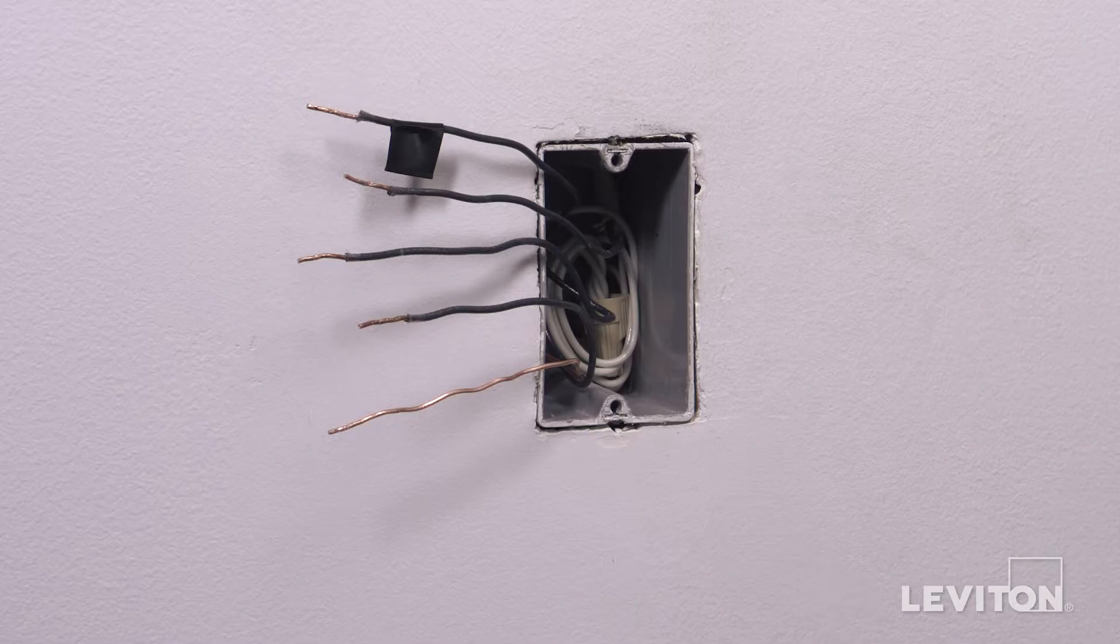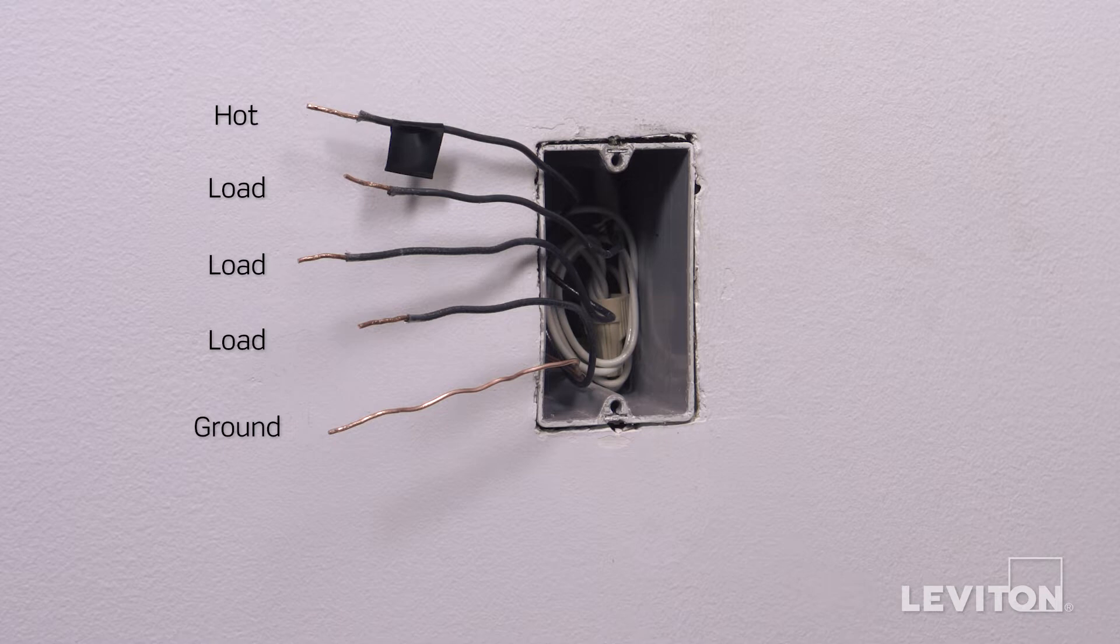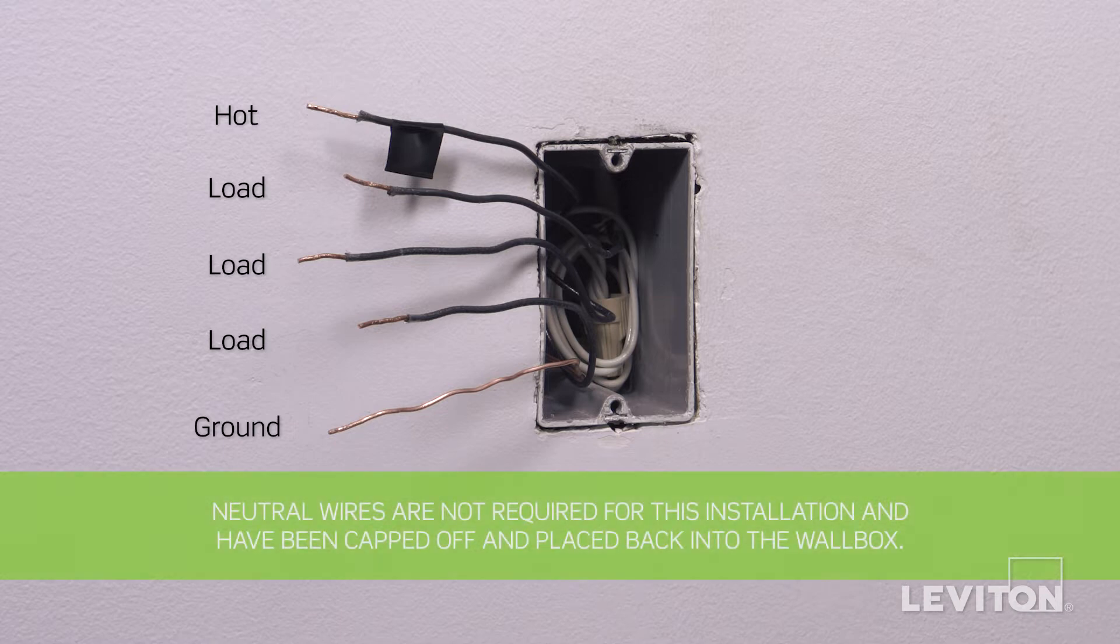In this example there is one black wire which is the hot, three black wires which are the loads, and a bare copper wire which is the ground. Keep in mind, the color of the wires may vary. The hot wire may be black or red. The ground wire may be green or bare copper. If you are unsure, contact an electrician.